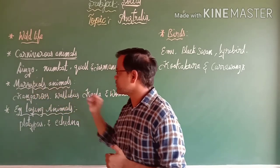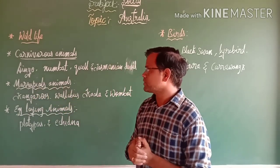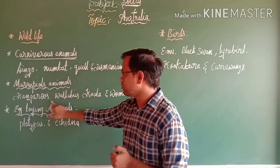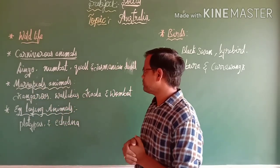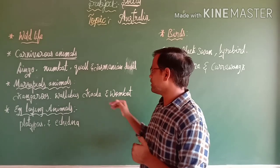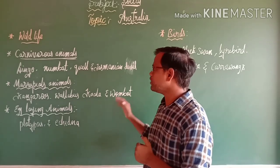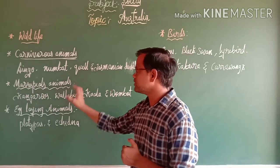The marsupial animals include kangaroo, wallabies, koala, and wombat. These are the important marsupial animals found in Australia continent.